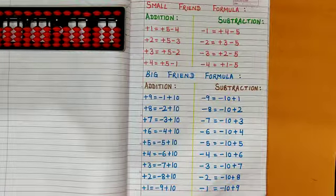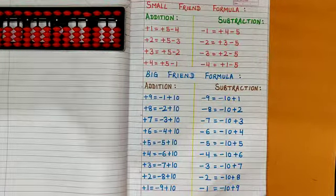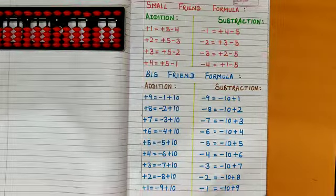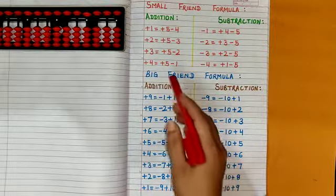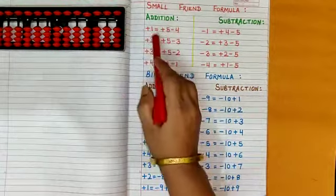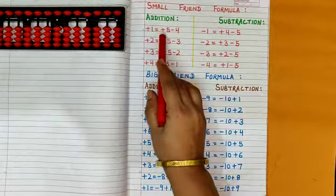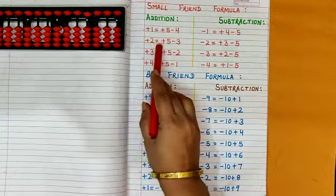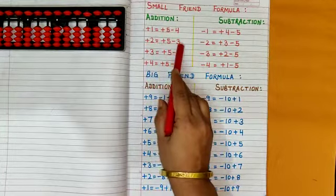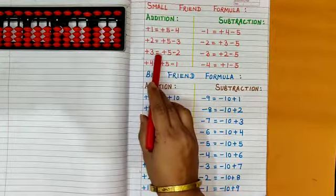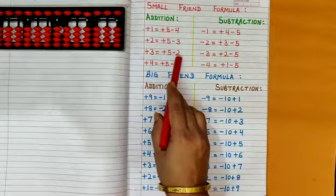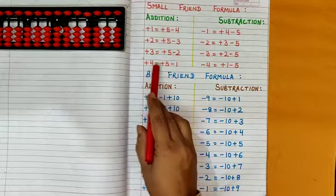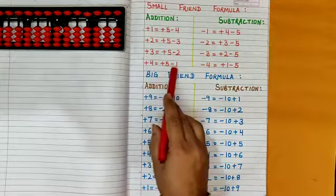In this video we have a revision of all the 34 formulas of Abacus. Let us start with the small friend formula. Small friend formula for addition: plus 1 is equal to plus 5 minus 4, plus 2 is equal to plus 5 minus 3, plus 3 is equal to plus 5 minus 2, plus 4 is equal to plus 5 minus 1.